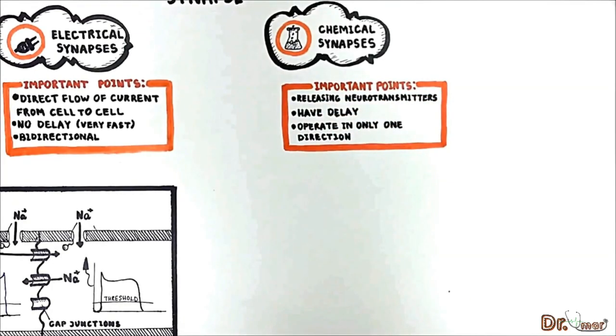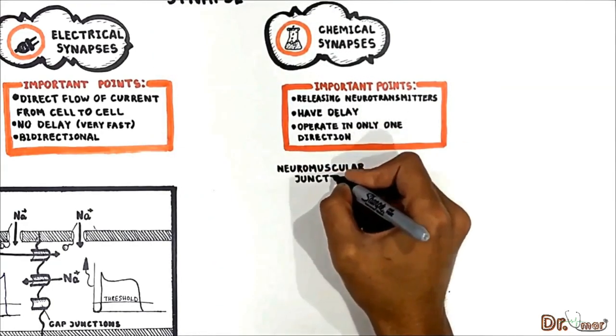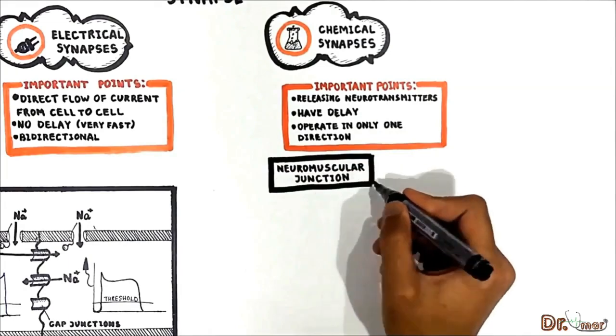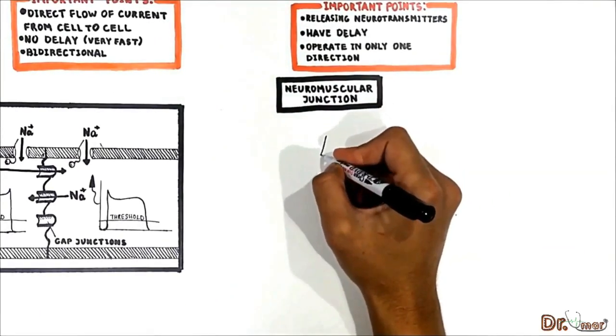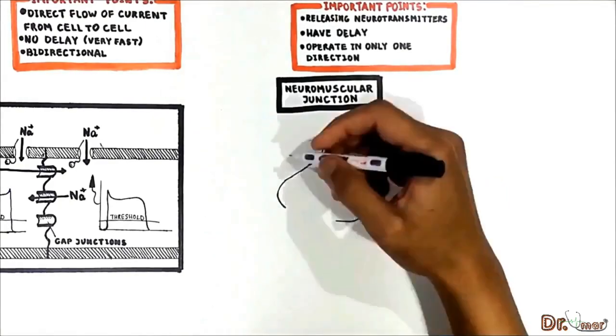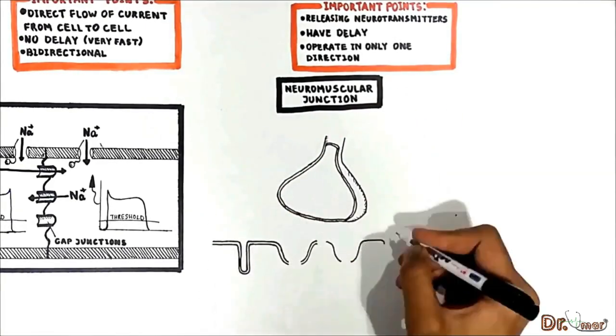Let's talk about chemical synapses giving an example of the neuromuscular junction. First let's see what is neuromuscular junction and study the main components that participate in neuromuscular transmission of nerve impulses.